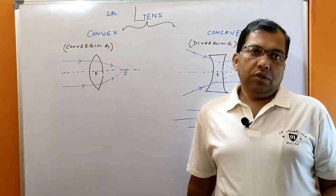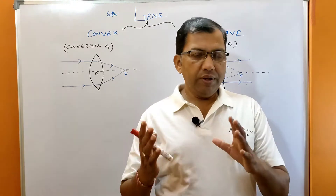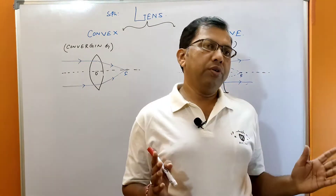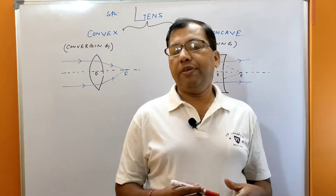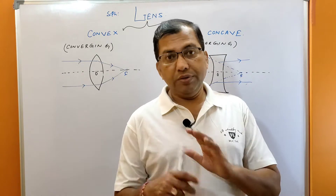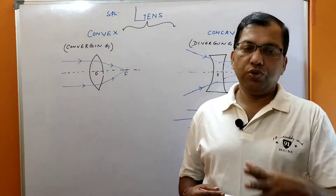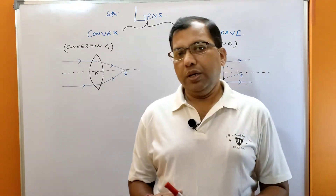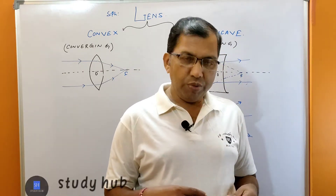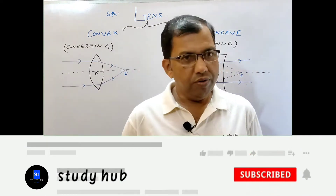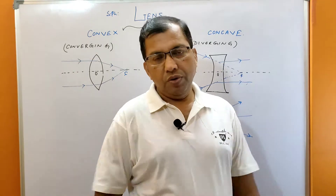Hello guys, welcome to my channel Study Hub. Today I will discuss the last part of the light chapter — lens and numerical problems. All problems will be given in the description box. I will just discuss the utility of lens image formations, mirror formula, lens formula, magnification, and internal reflection. That's the end of the chapter. After this chapter, you'll be able to answer any questions regarding these topics.